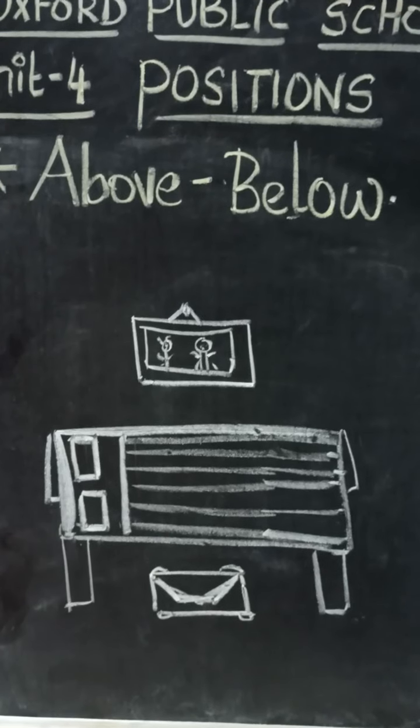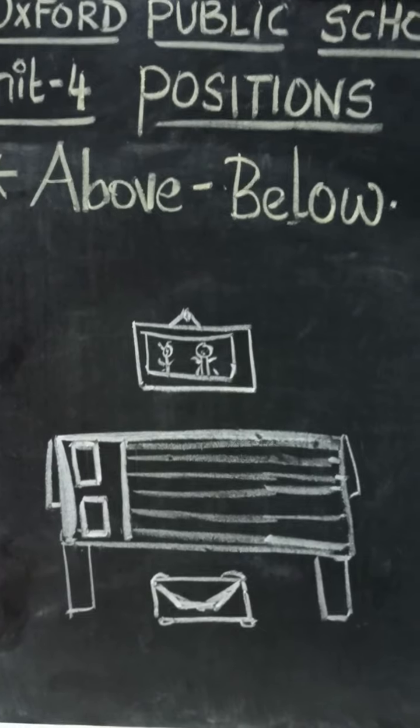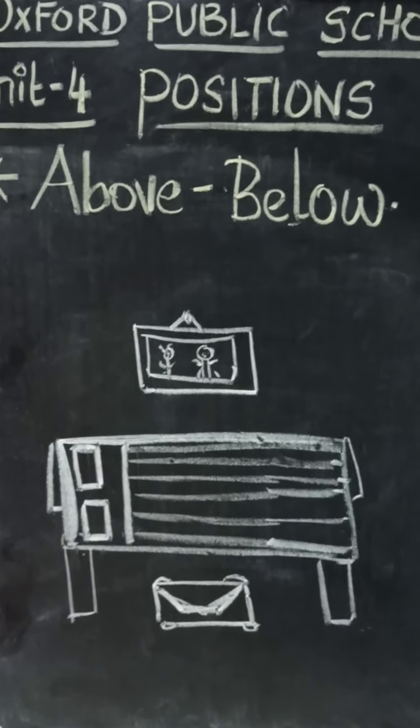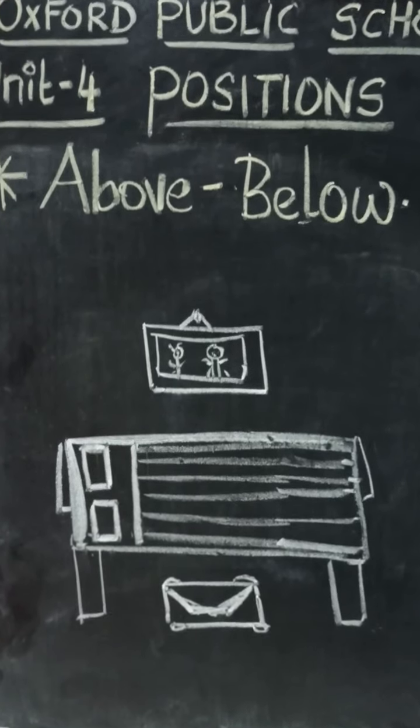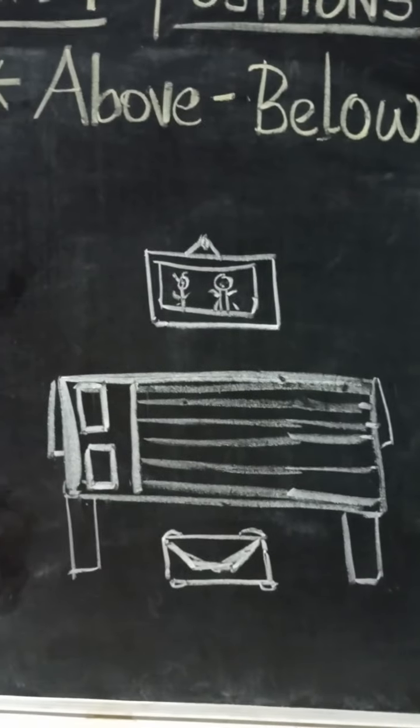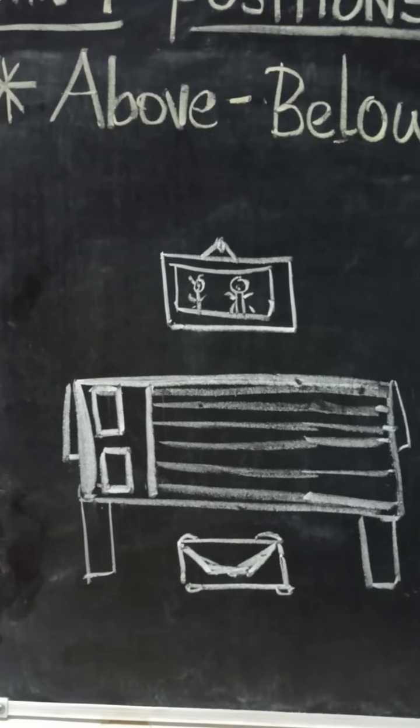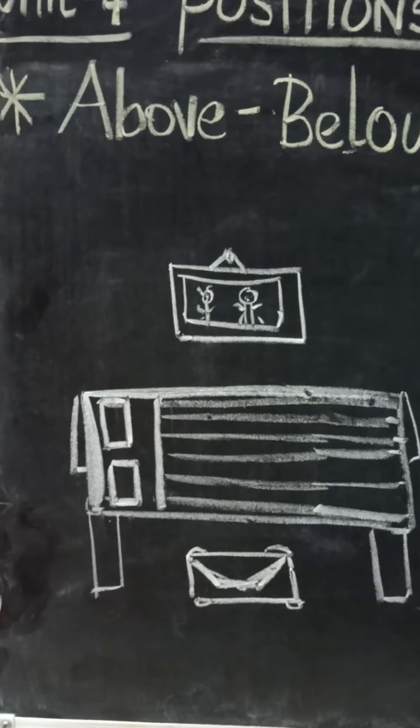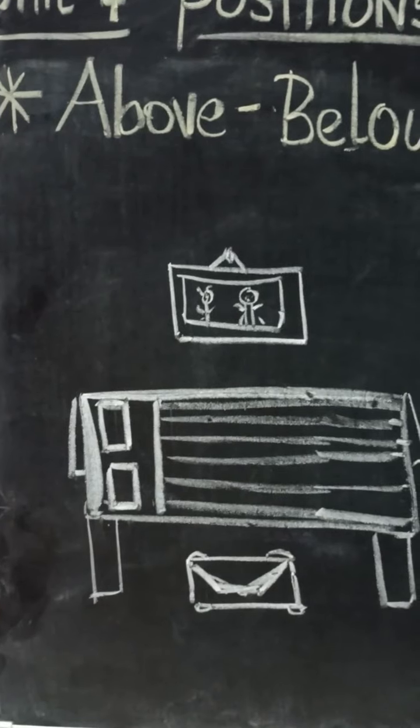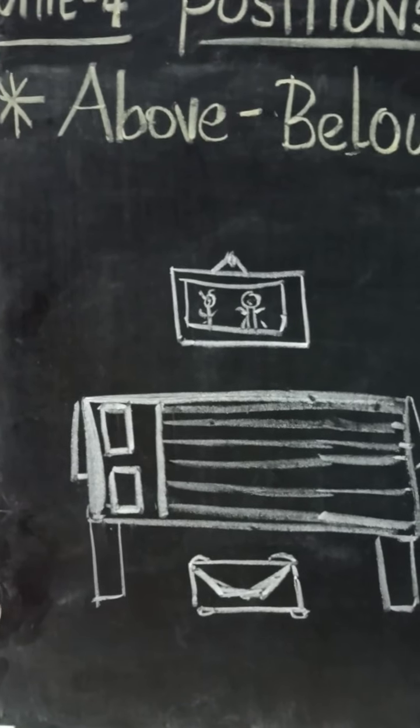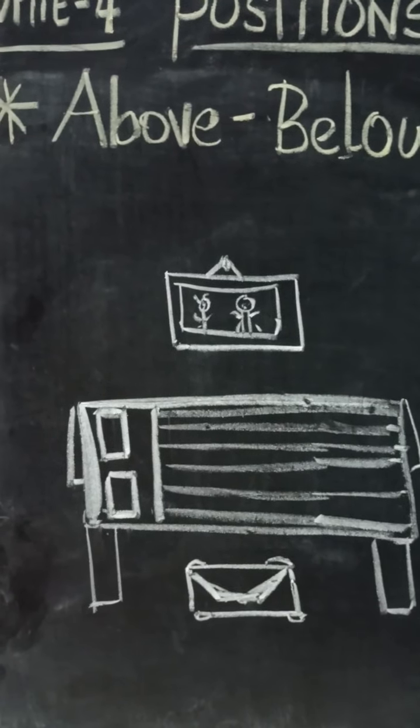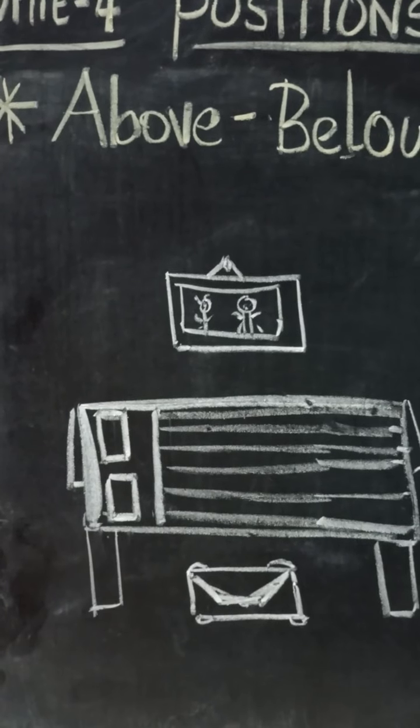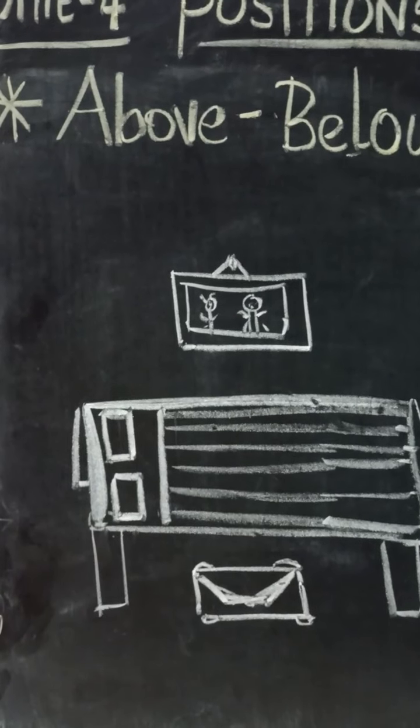The next position we are going to learn is above-below. It is similar to on-under. Look at the bed. Are you able to see the bed here? And a photo frame which is attached to the wall. I am going to read out the sentence so you can find out the difference. There is a photo frame above the bed.